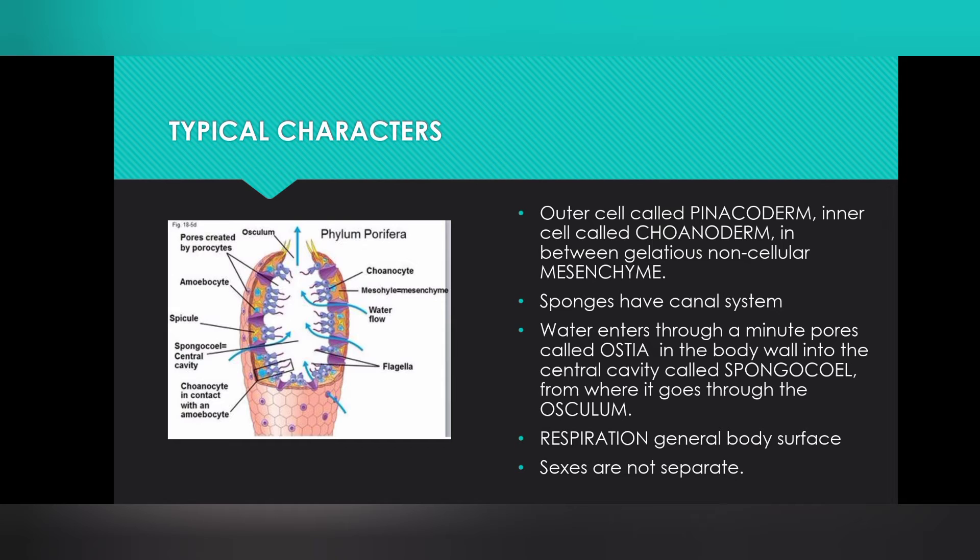Typical characters. There is an outer cell called pinacoderm and the inner cell called choanocytes, otherwise called flagellated or collar cells. In between there is a barrel-shaped cell called porocyte. Each and every porocyte has a single opening called ostia.